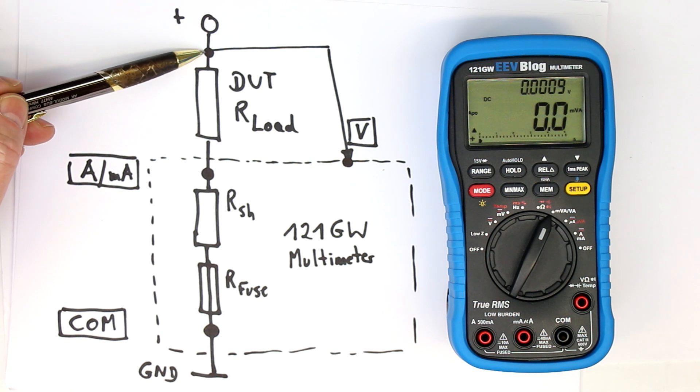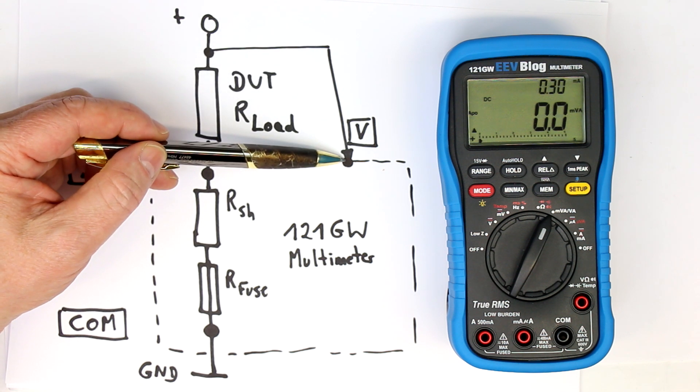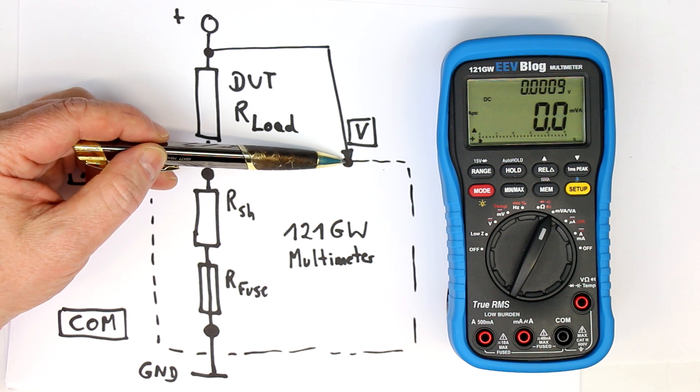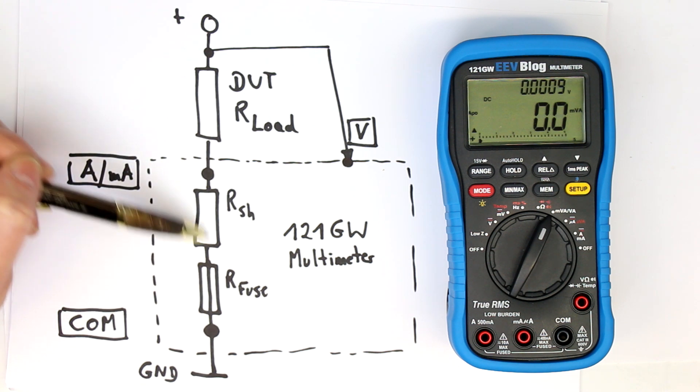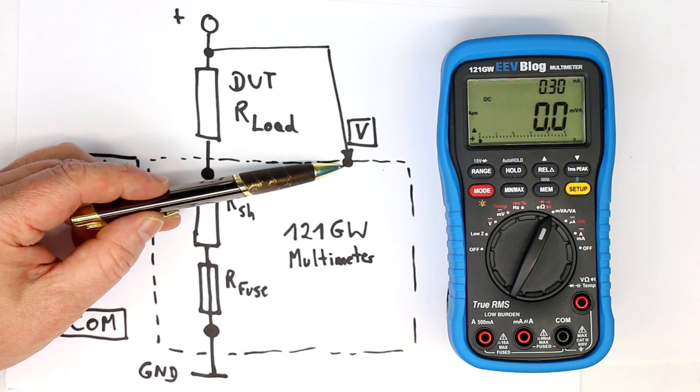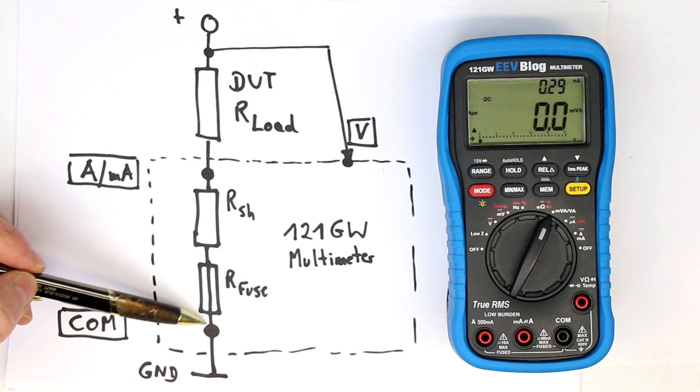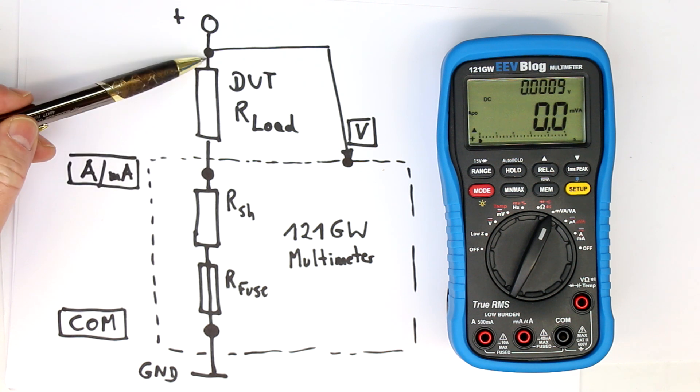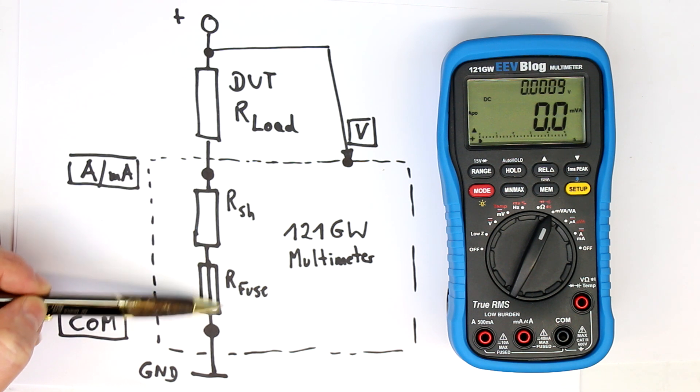Simultaneously you tap off the voltage over your device under test and feed it into the volts input of the multimeter. Internally the multimeter measures the current at the amps input. Simultaneously, probably with a multiplexer in sequence, it measures the voltage. But the voltage is referred to this point, and this is not the voltage measured over your load, but the voltage measured over your load plus the shunt resistor plus the fuse resistance.